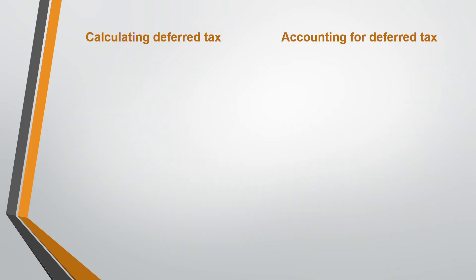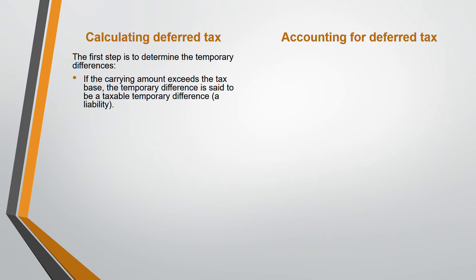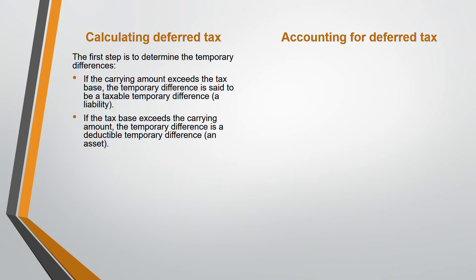To calculate deferred tax, the first step is to determine the temporary difference. If the carrying amount is more than the tax base, the difference is known as a taxable temporary difference — it's a liability. If the tax base is more than the carrying amount, the temporary difference is known as a deductible temporary difference — it's an asset. Students often confuse these two, so remember: carrying amount more than tax base equals liability; tax base more than carrying amount equals asset.